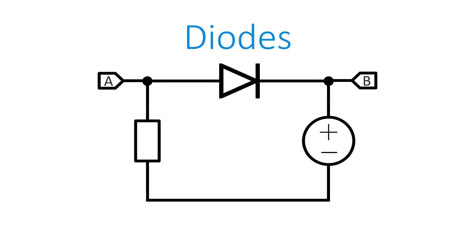If a current tries to flow in the opposite direction because the voltage at point B is higher than at point A, that diode will block the current flow.